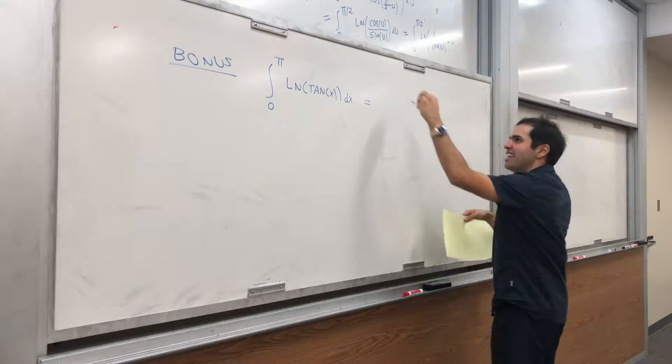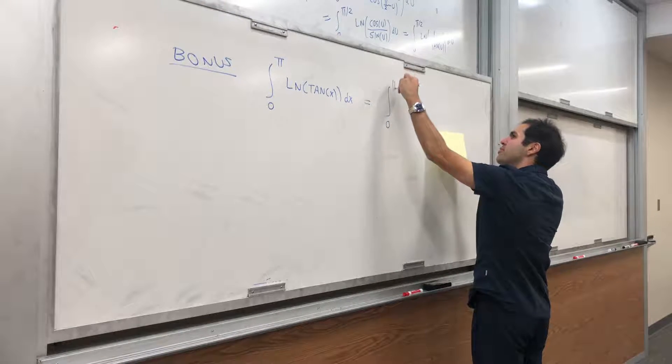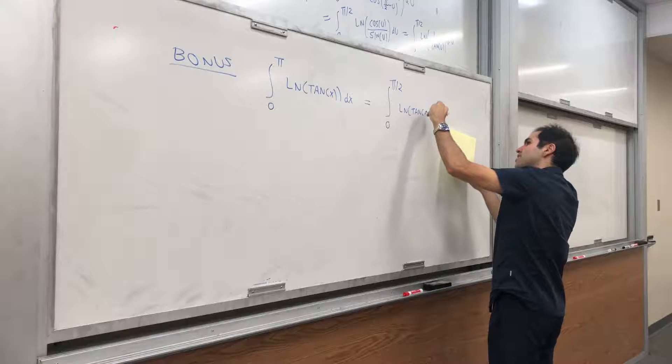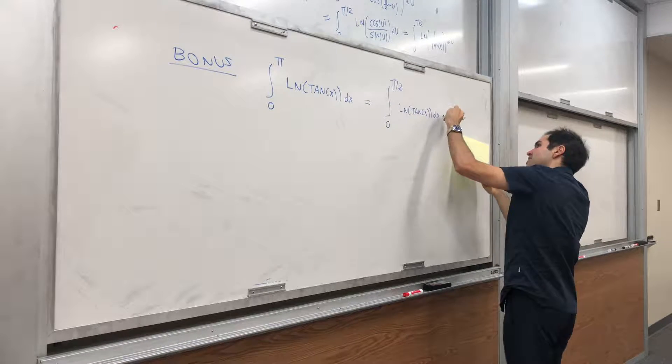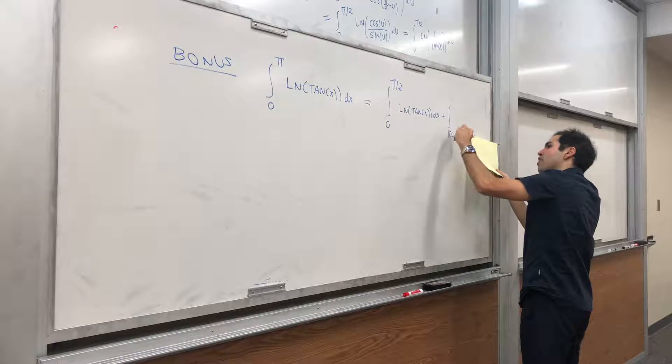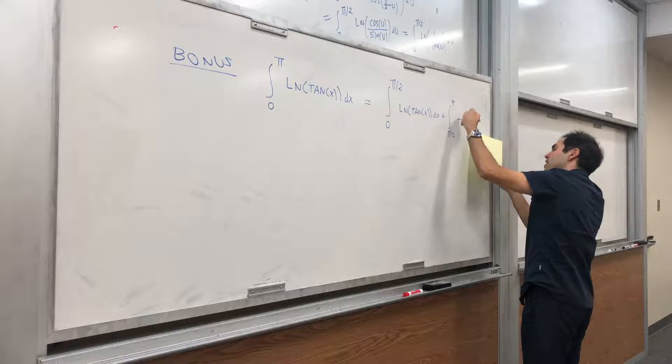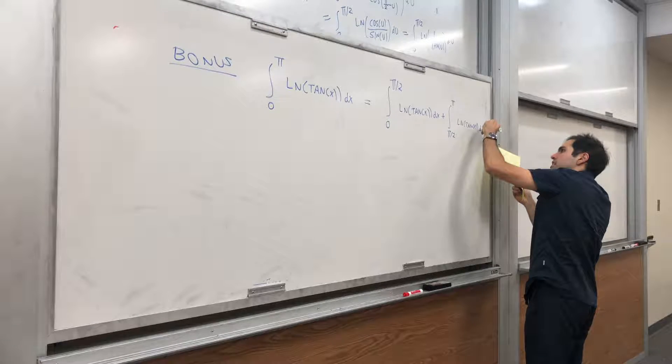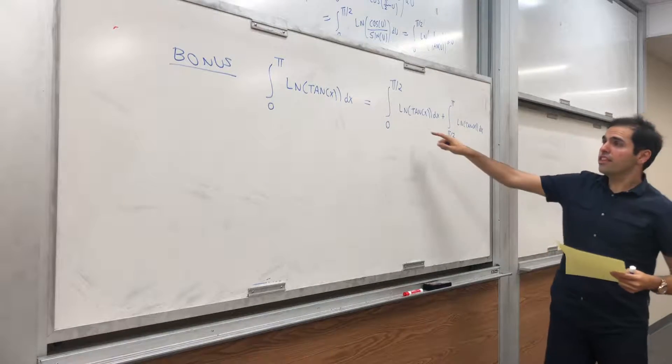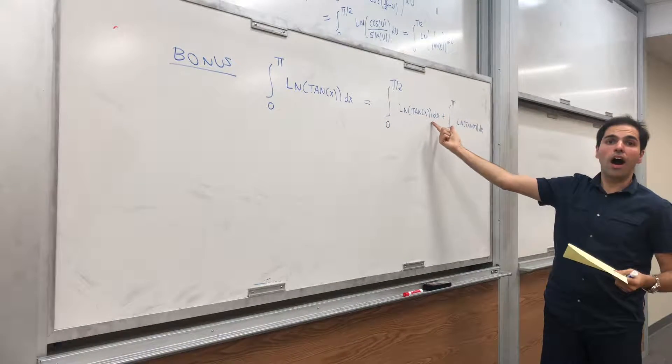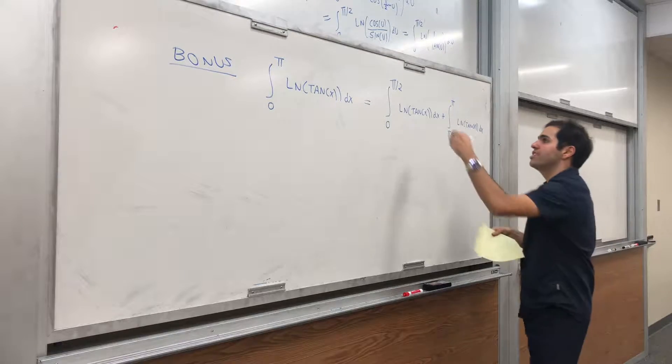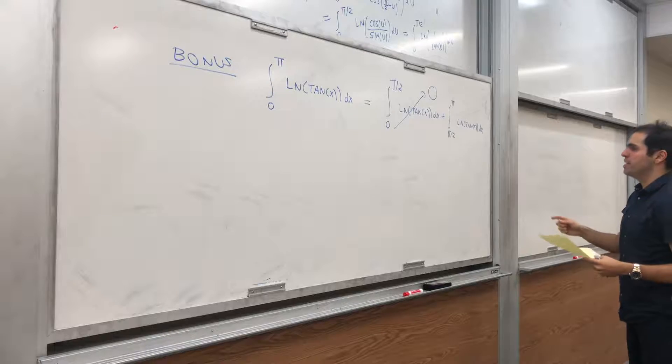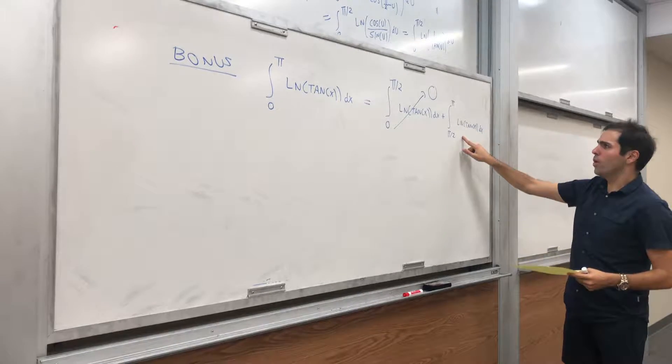But we can still calculate it. So it's integral from 0 to π over 2, ln of tangent of x dx, plus integral from π over 2 to π of ln of tangent of x dx. Now, this is precisely our integral I, so we just calculate it to be 0. So whoosh! It disappears.